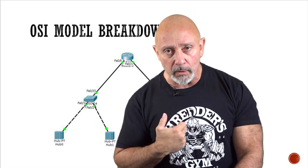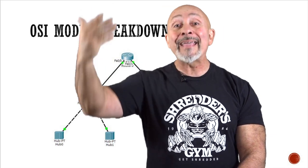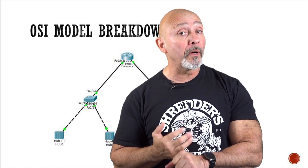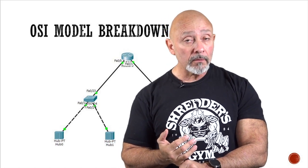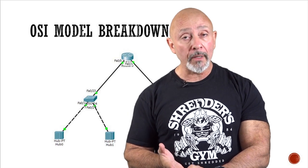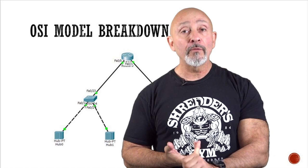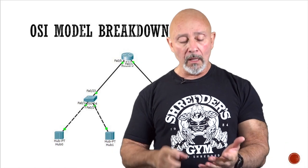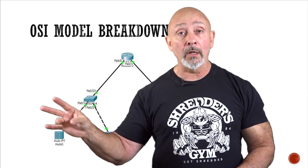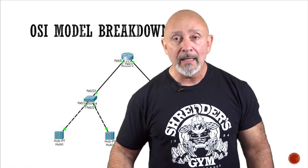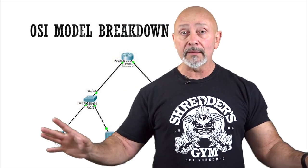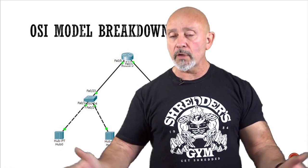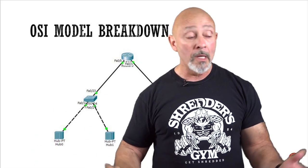In a nutshell, that's your OSI model. Seven layers: seven, six, five, four, three, two, one. The PDUs going down: Data, Segments, Packets, Frames, Bits - 'Don't Stop Pouring Free Beer.' The layer names: 'All People Seem To Need Domino's Pizza' - Application, Presentation, Session, Transport, Network, Data Link, Physical. Know the basic stuff we covered and that's all you need for your certification exam or real-world questions.